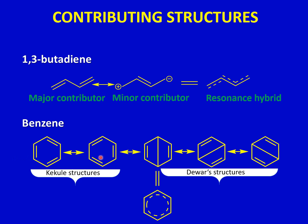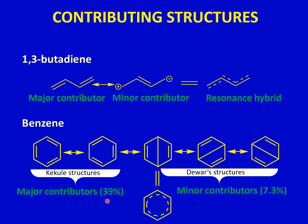The Kekulé structures are considered more stable compared to the three bicyclic Dewar structures, which is why the Kekulé structures are the major contributors to the real structure of benzene — each contributing 39%. The Dewar structures are the minor contributors, each contributing 7.3%. Adding all of them: 39 + 39 + 7.3 + 7.3 + 7.3 + 7.3 + 7.3 ≈ 99.9%, so these five structures collectively describe the full real structure of benzene.